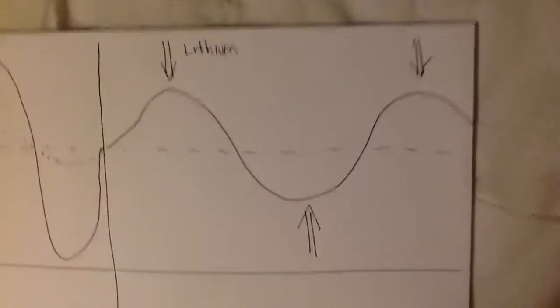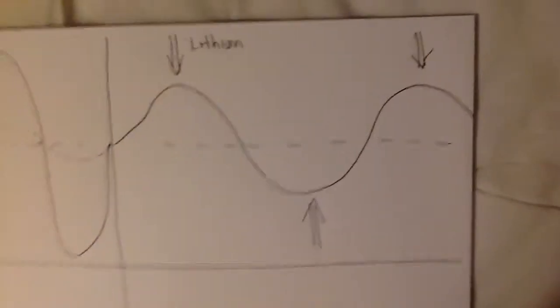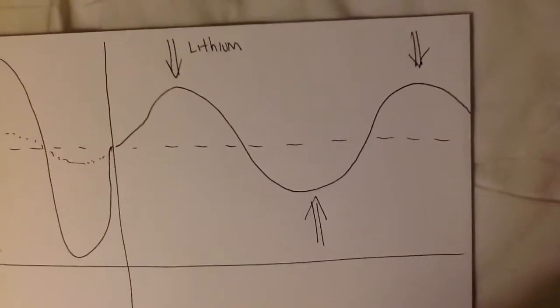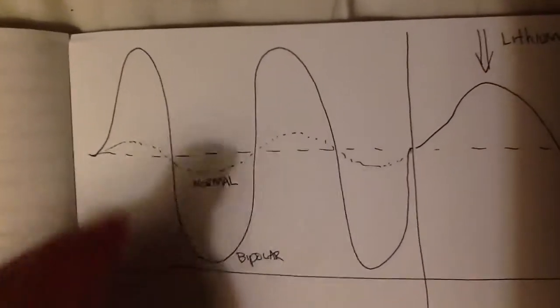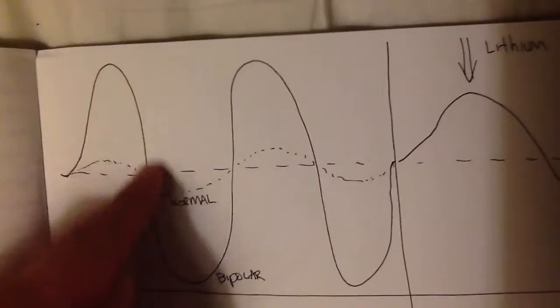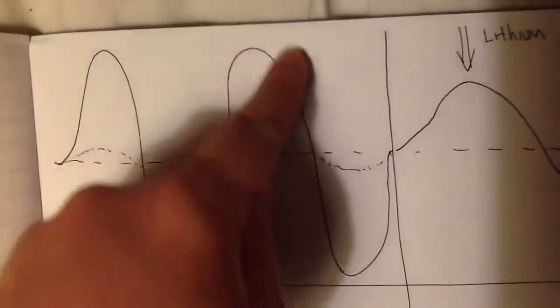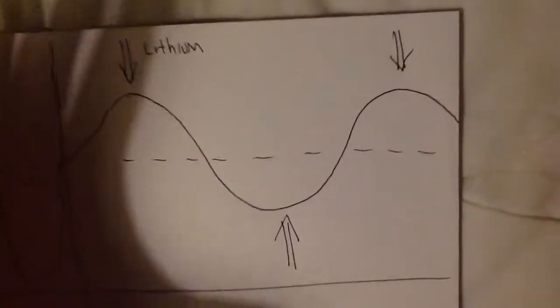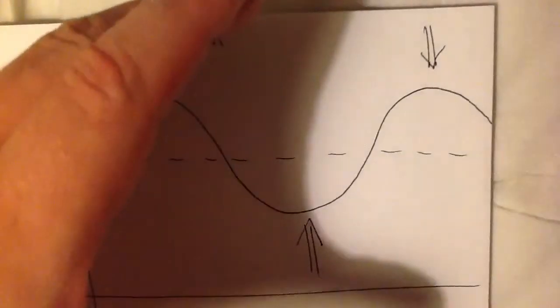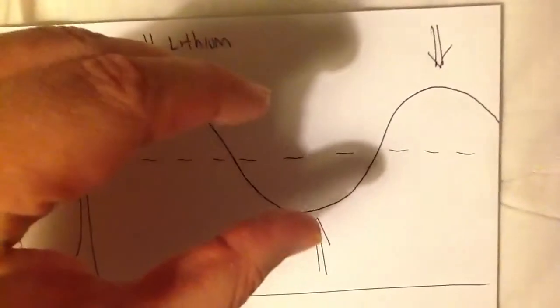With lithium, a mood stabilizer, we take this curve, which was very chaotic, very labile, very unstable, and we kind of squunch it down. So lithium, as a mood stabilizer, squunches down the curve.